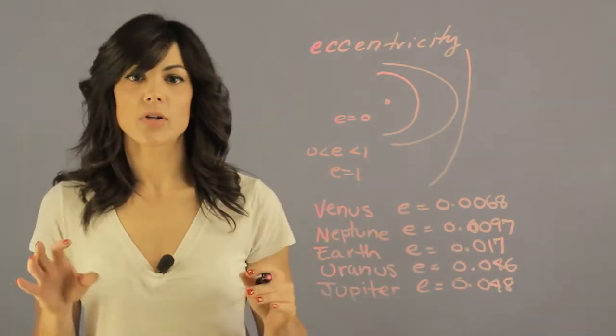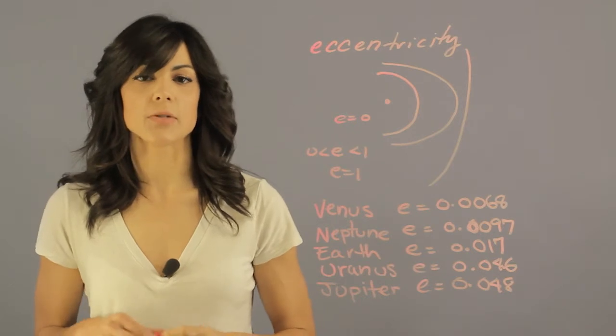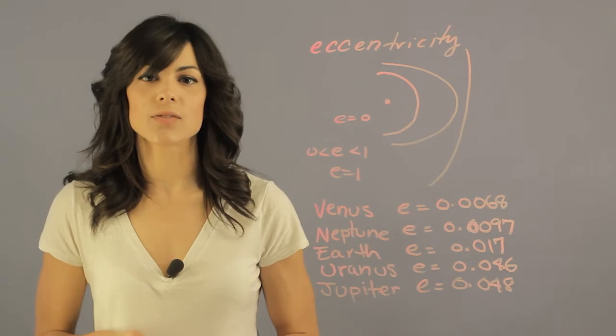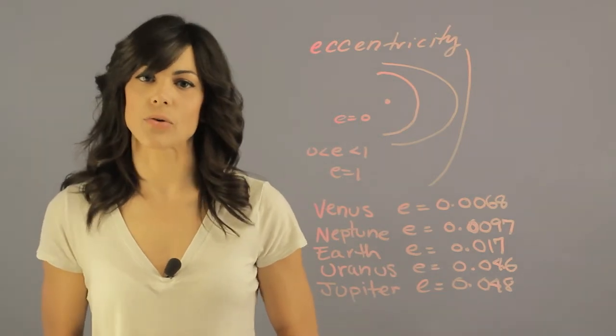These are the five planets that are the closest to having a circular orbit in our solar system. My name is Eylene Pirez and I'm an astrophysicist, and this is five planets that have nearly circular orbits.